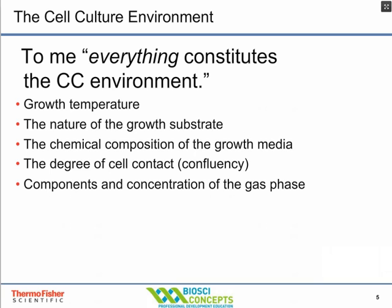One of the things that is important in cell culture is the cell culture environment, which includes things like the growth temperature, the nature of the growth substrate, whether the cells are on a hydrophobic or hydrophilic matrix, whether that matrix is negatively or positively charged, the degree of confluency — which is the ratio of surface area occupied by cells divided by the surface area available times 100 — the nature of the plastic, and the components and concentration of chemicals in the gas phase, such as CO2 and oxygen.